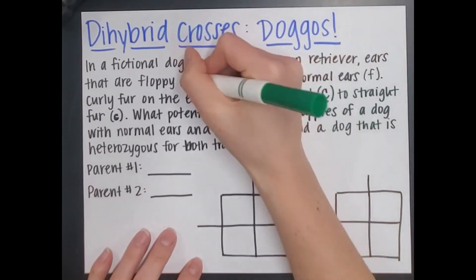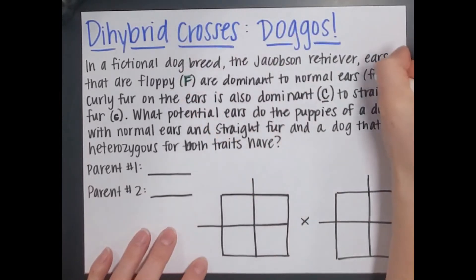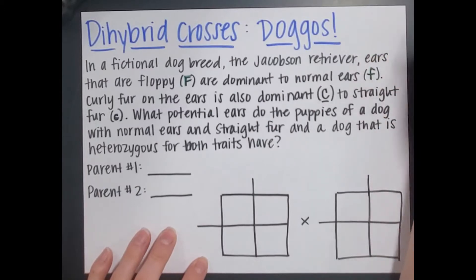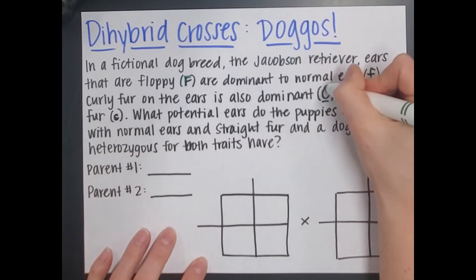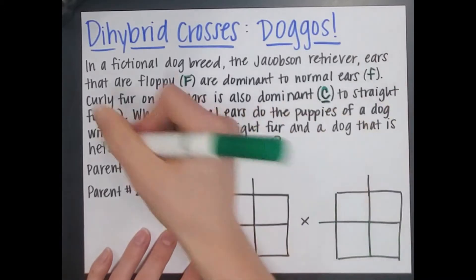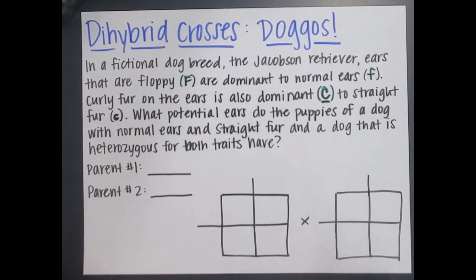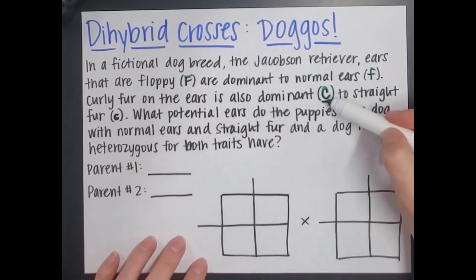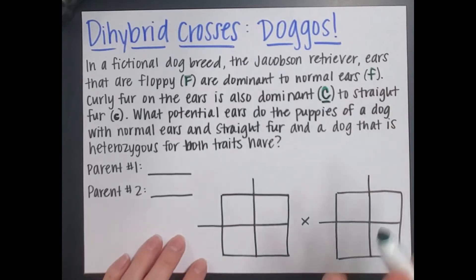Let's break this down. Floppy ears is capital F; normal ears is lowercase f — normal ears are recessive. Curly fur is capital C; I put a line underneath to remind myself it's dominant. Straight fur is lowercase c. The c's can look the same if you go quickly, so I put a line under any dominant C to remind myself it's a capital letter.